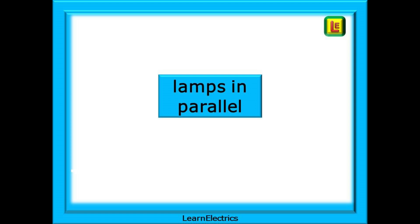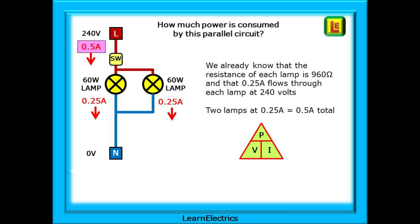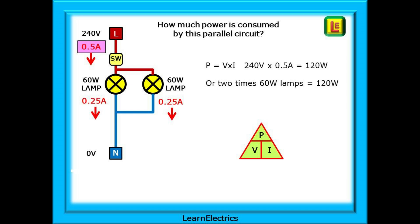Now we can make some calculations for lamps in parallel and see what numbers we get, and then compare these to a series circuit. How much power is consumed by this parallel lighting circuit? We already know that the resistance of each lamp is 960 ohms and that 0.25 amps flows through each lamp at 240 volts. So 2 lamps at 0.25 amps each is a total of 0.5 amps.